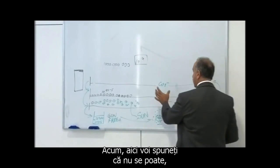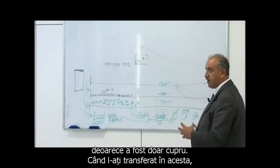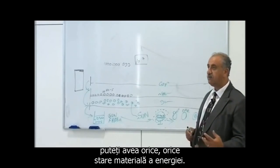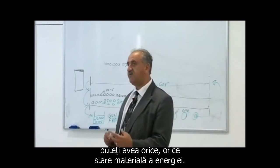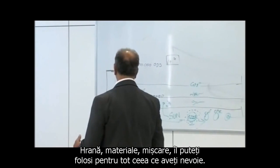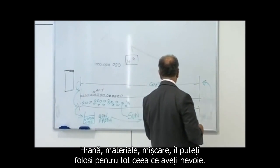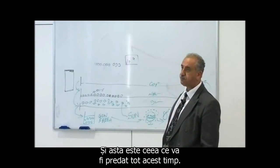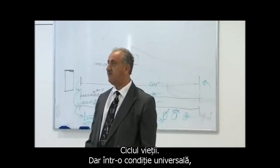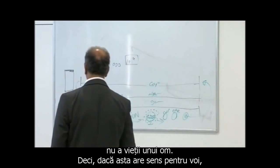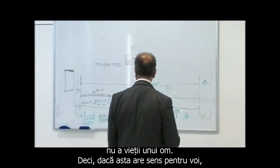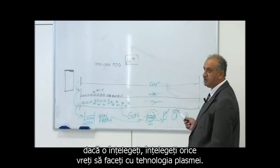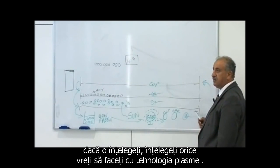Here, you have no say in what it would be, because it was only copper. When you transfer it to this, you can have anything — any matter, state of energy, food, material, motion — whatever you need, you can use it for. And this is what we've been teaching for all this time: the cycle of life, but in the universal condition, not in the life of man. So if that makes sense to you, if you understand it, you understand everything to do with Plasma technology.